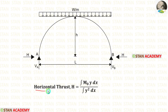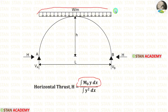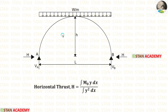We know the formula for the horizontal thrust: H is equal to the integration of M0·y·dx divided by the integration of y²·dx. First, let us calculate the numerator, integration of M0·y·dx. To calculate this, we need to make sections in the arch. Since the UDL is acting constantly for the full span, only one section is enough.